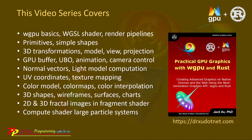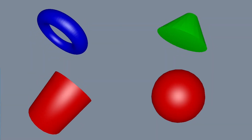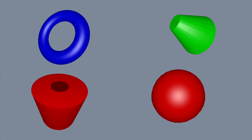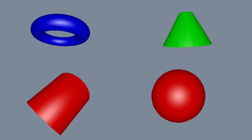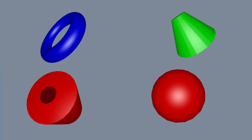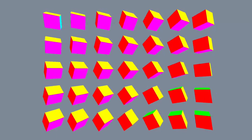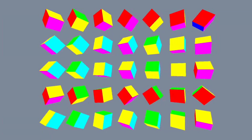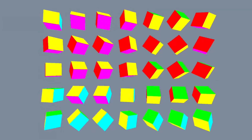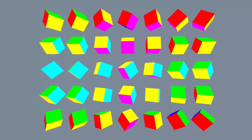Next, I will show you some example graphics objects we are going to create in this video series. You can see that WGPU allows you to create advanced 3D graphics objects with real-time animation in the GPU, which are impossible to do in CPU. Here are some simple 3D shapes, including sphere, cylinder, cone, and torus. These cubes are created using an instanced approach, which allows you to draw more than one of the same objects, and is faster than drawing each object individually.